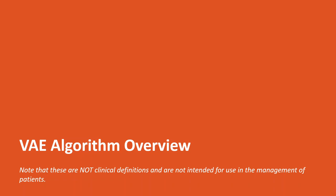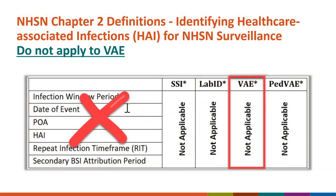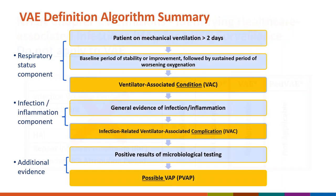The VAE algorithm is a surveillance algorithm — it is not a clinical definition and is not intended for use in the management of patients. The VAE algorithm has three tiers. The first tier, ventilator associated condition or VAC, is a respiratory status component that identifies worsening oxygenation after a period of stability or improvement on the ventilator.